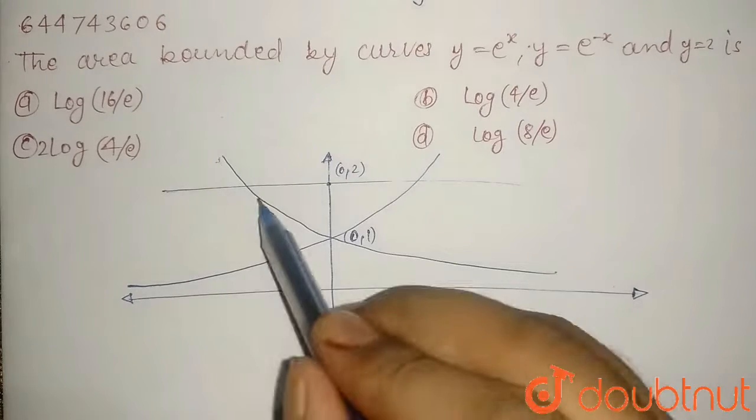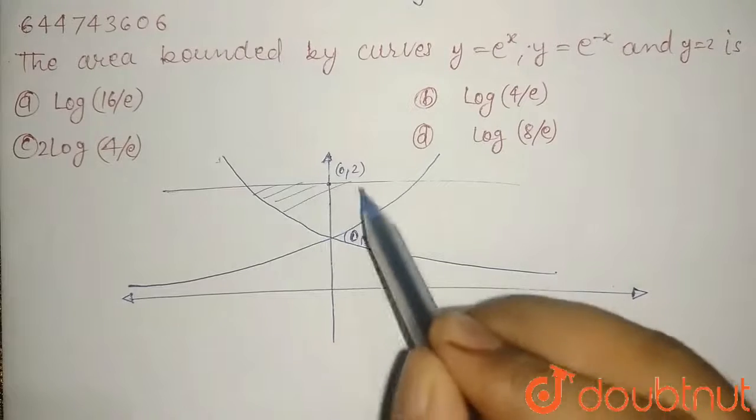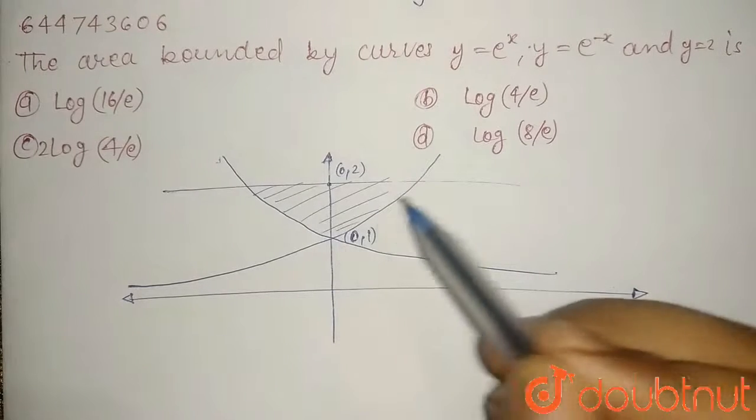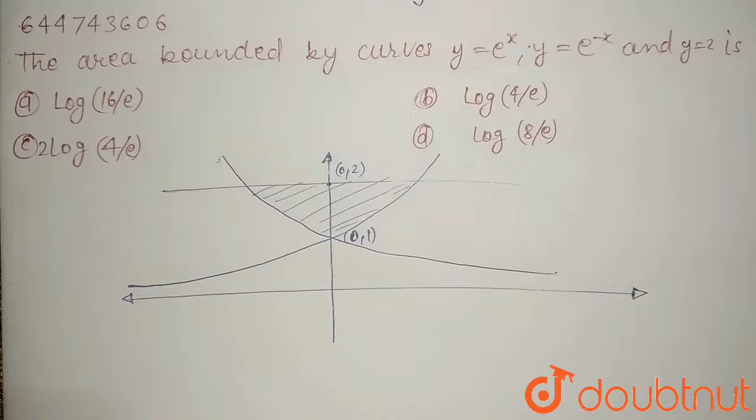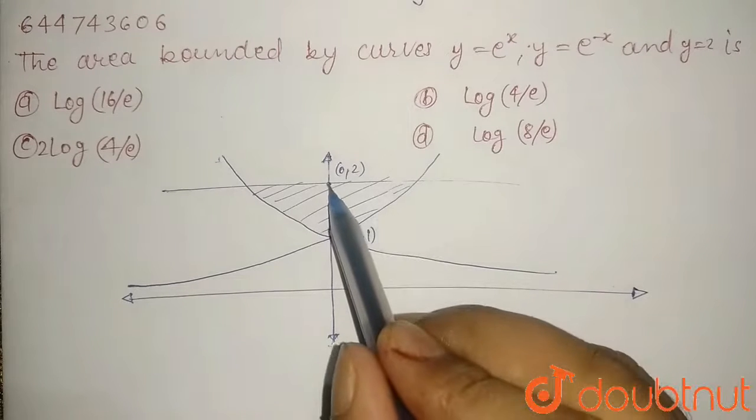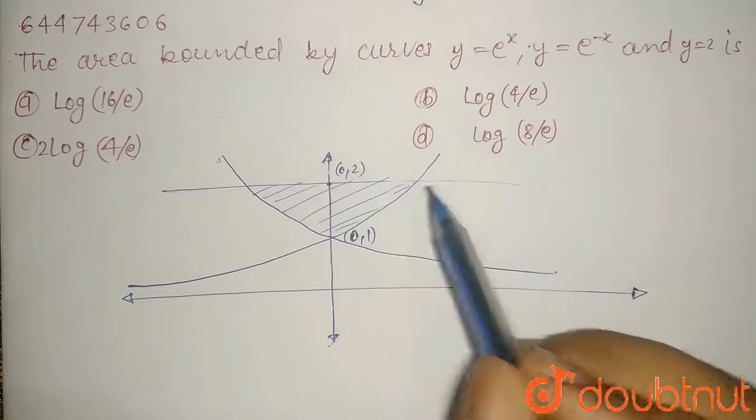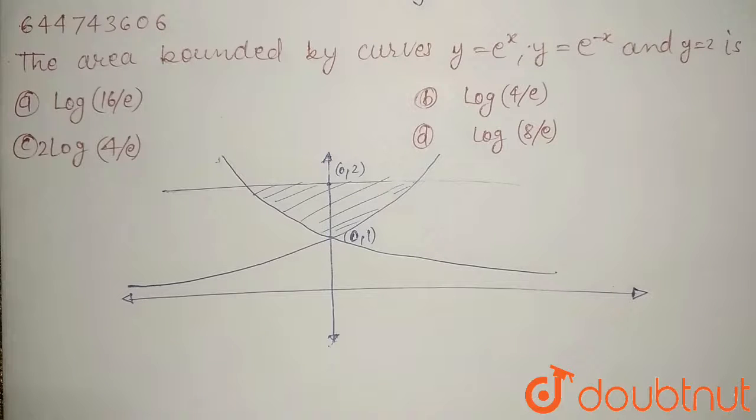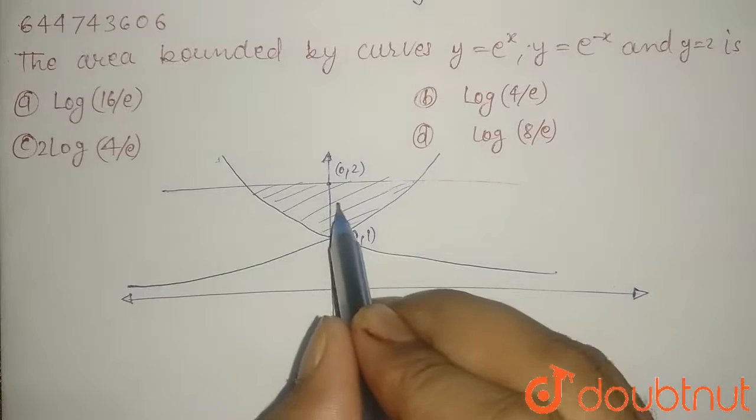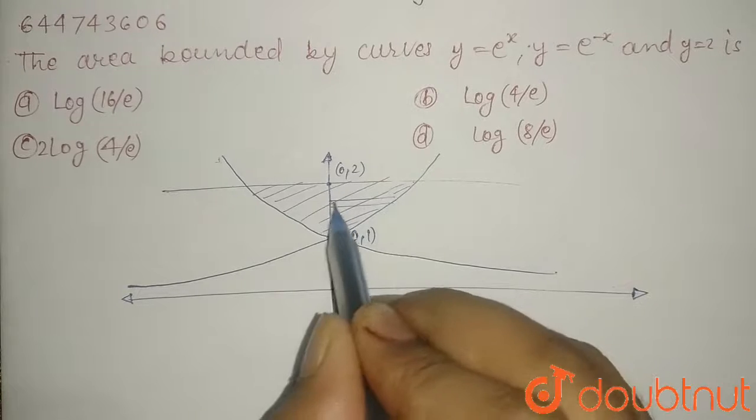Now we have to find the area of this shaded region. We can clearly see that this region is symmetric about the y axis, so we first have to find area of this region and multiply that area by 2. In this case, it is easier to find the area by using horizontal strips.